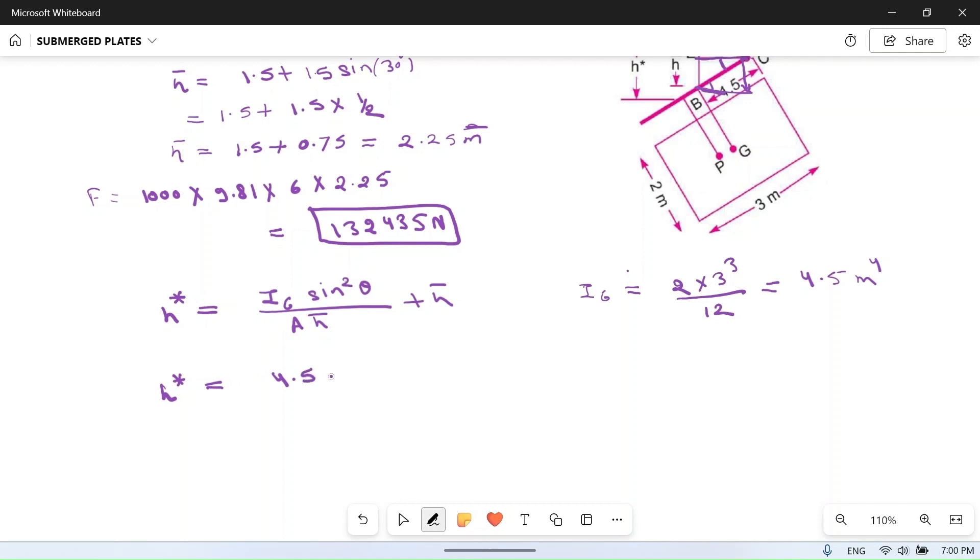So h* will be 4.5 times sin θ, where θ is 30 degrees, so sin θ equals 1/2 squared, divided by 6 times 2.25, plus 2.25. If you solve this, you will get 0.0833 plus 2.25, which equals 2.33 meter.